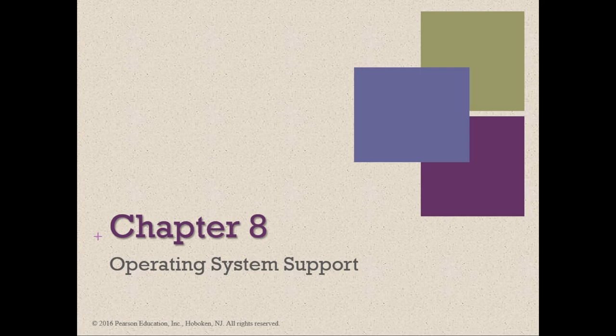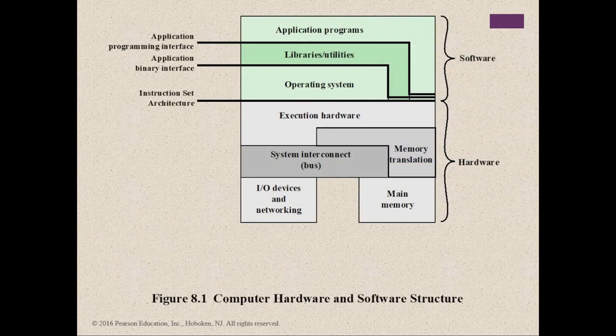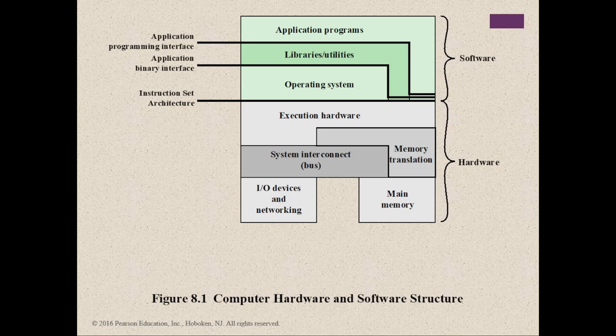Let's start with Figure 8.1, which is about computer hardware and software structure. An OS is a program that controls the execution of application programs and acts as an interface between applications and the computer hardware. It has two objectives: convenience — making the computer more convenient to use — and efficiency — allowing the computer system resources to be used in an efficient manner. The hardware and software used in providing applications can be viewed in a layered or hierarchical fashion.